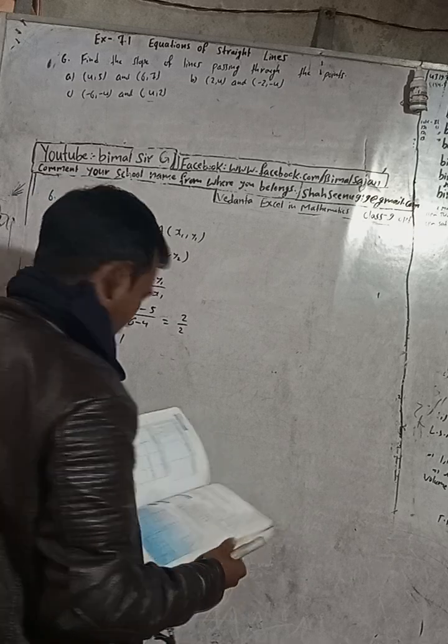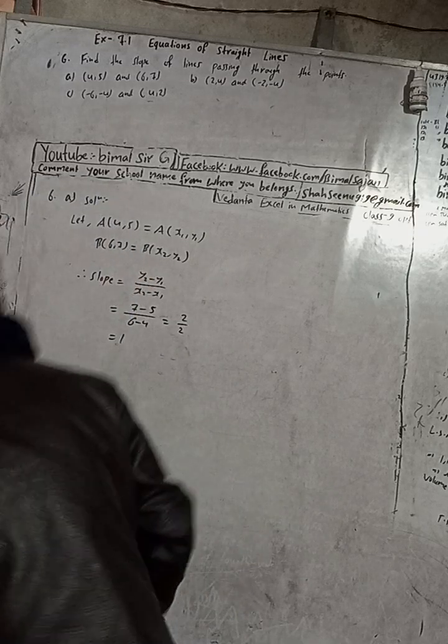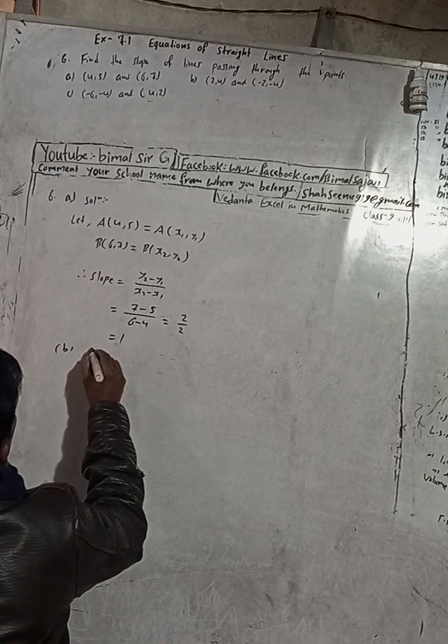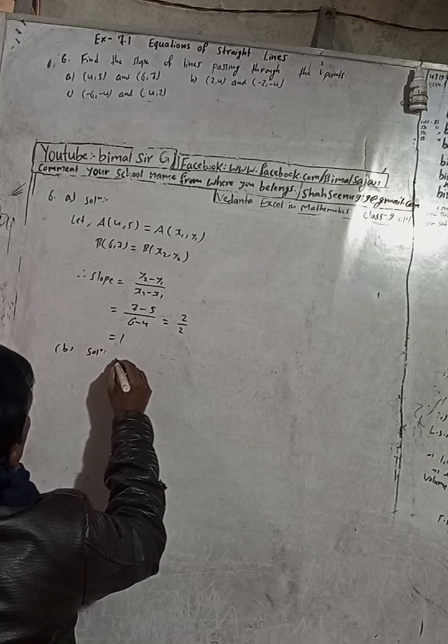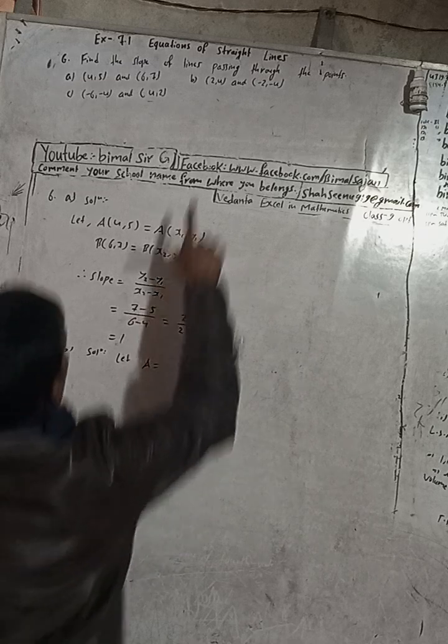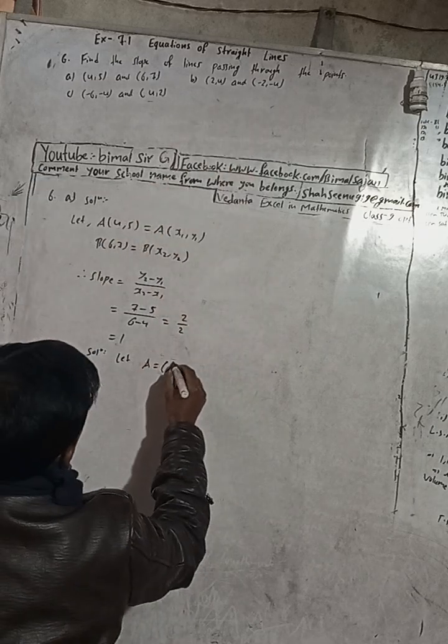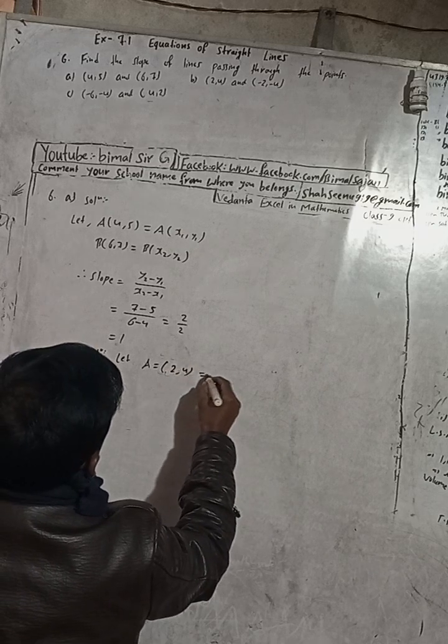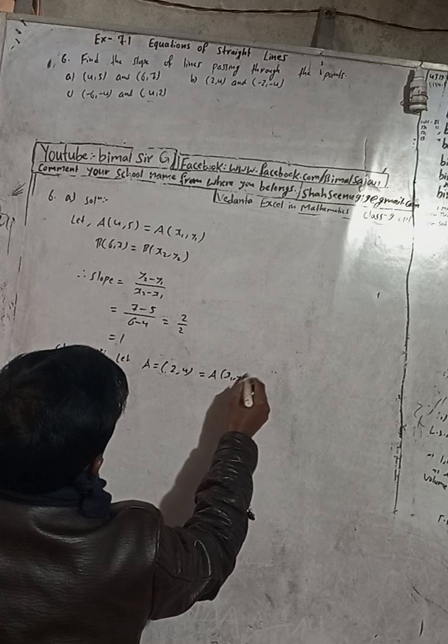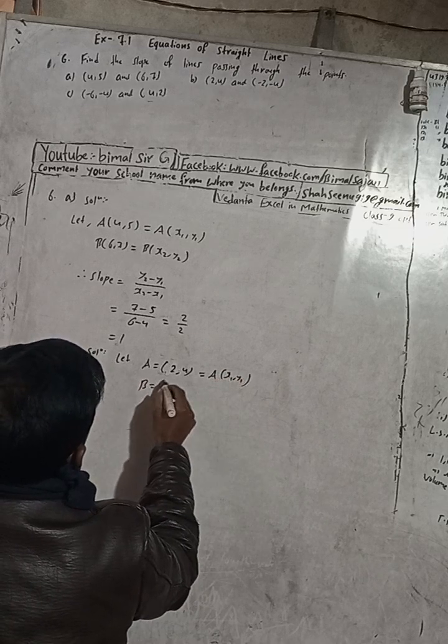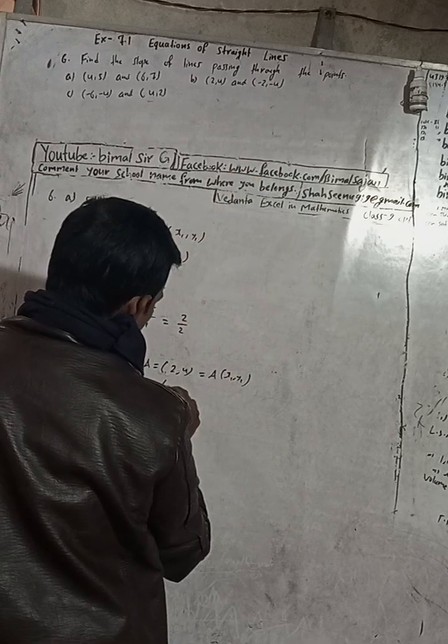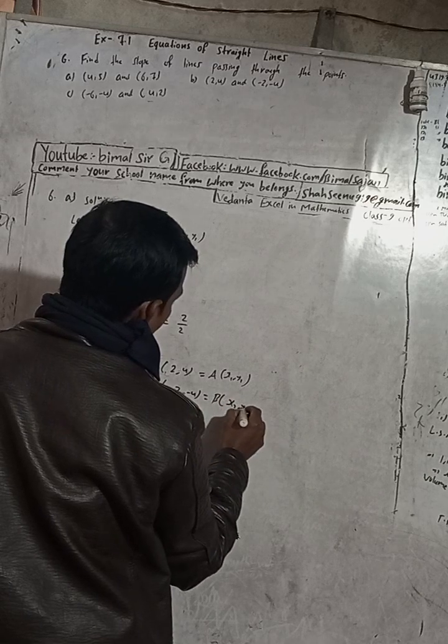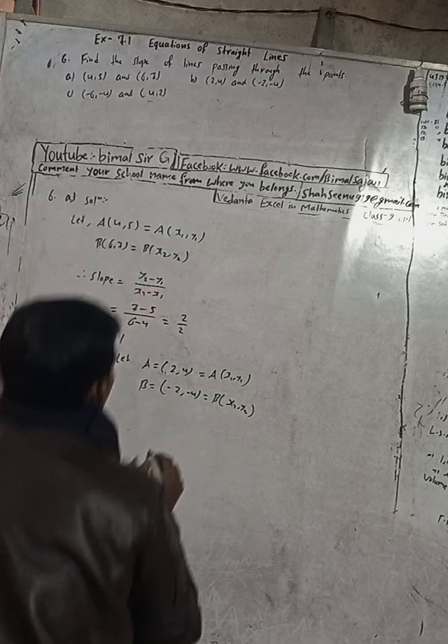Part b: The answer in the book is 2. Now I am going to solve. Let A equal (2, 4), so this is (x1, y1). And B equals (-2, -4), so this is B equals (x2, y2).